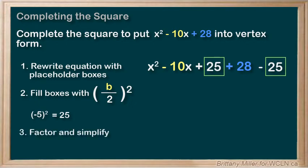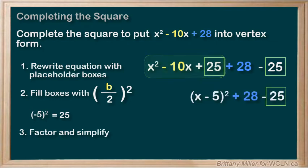Step 3. This part is going to factor into x minus 5 squared. And then we just simplify what's left over, leaving us with an answer of x minus 5 squared plus 3.